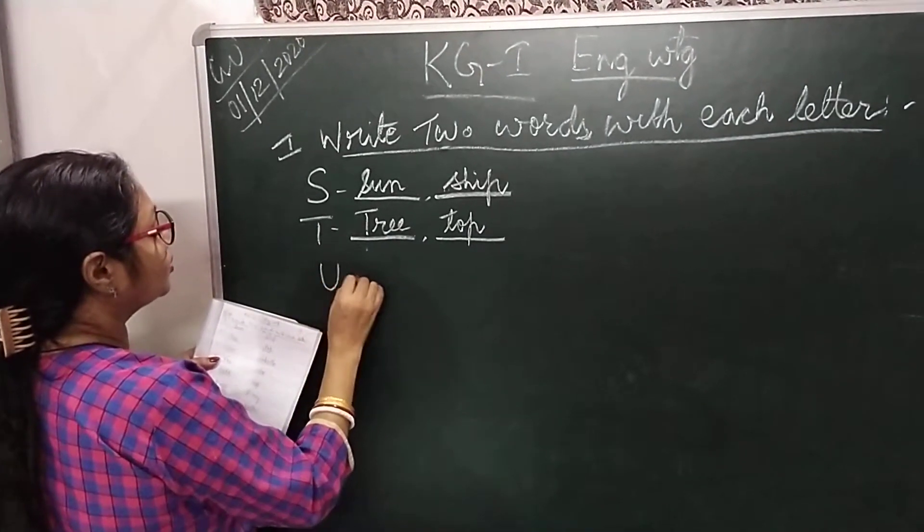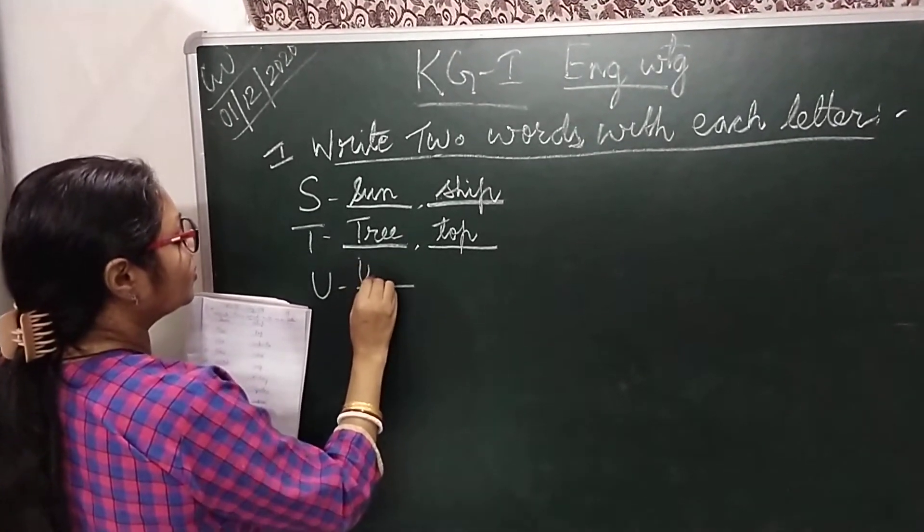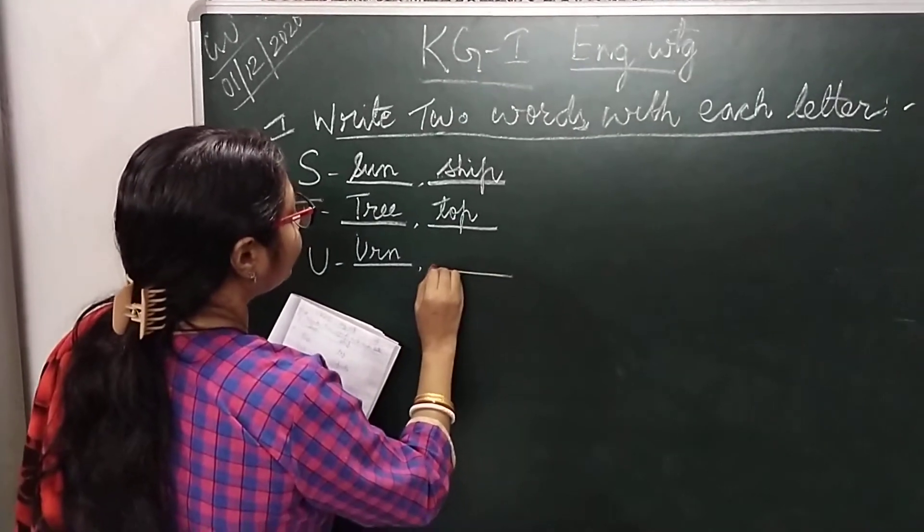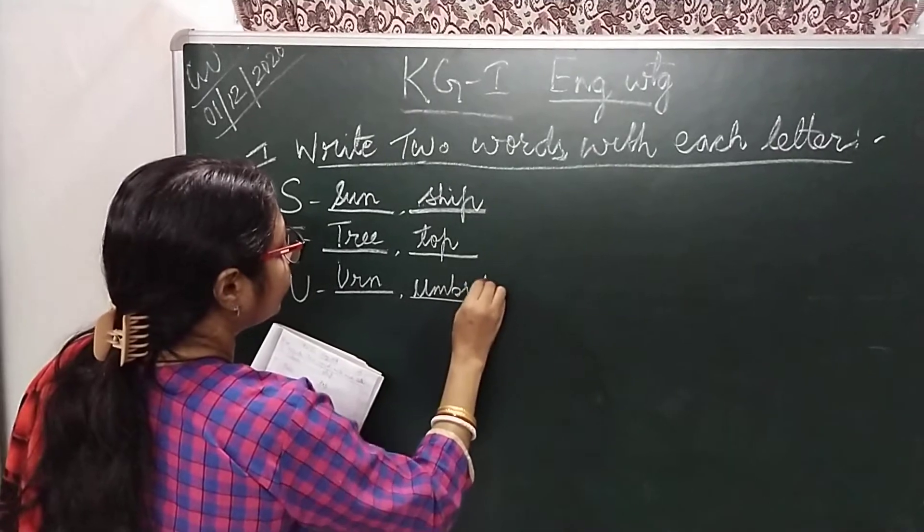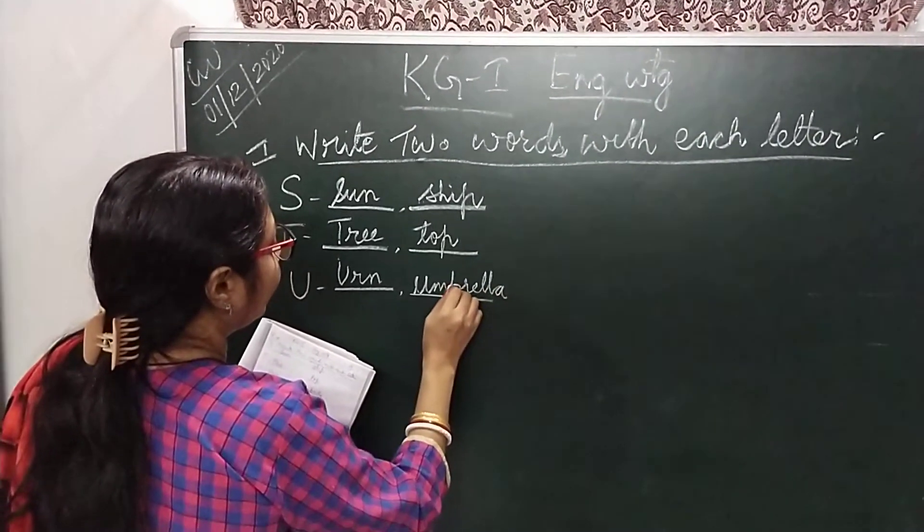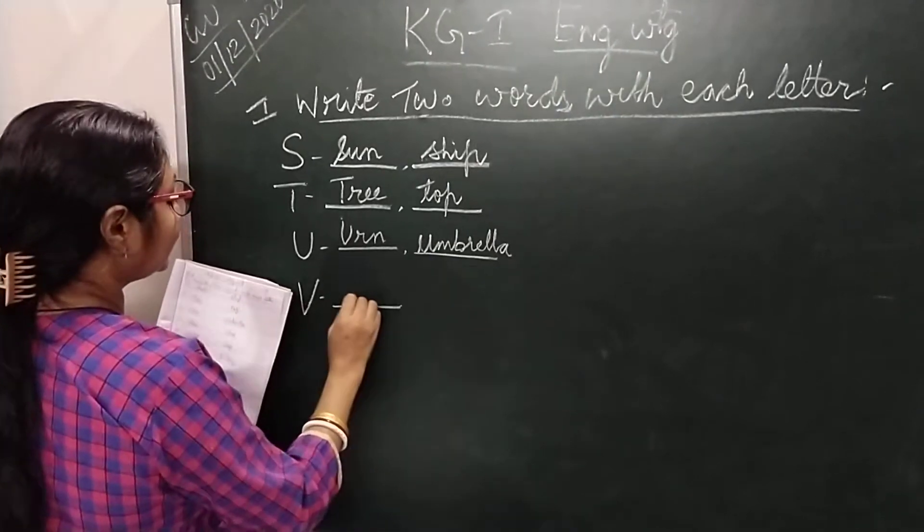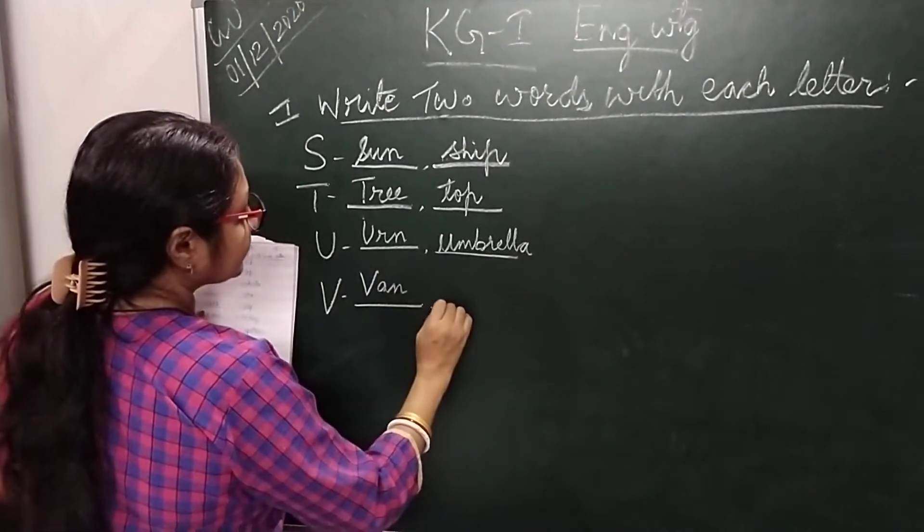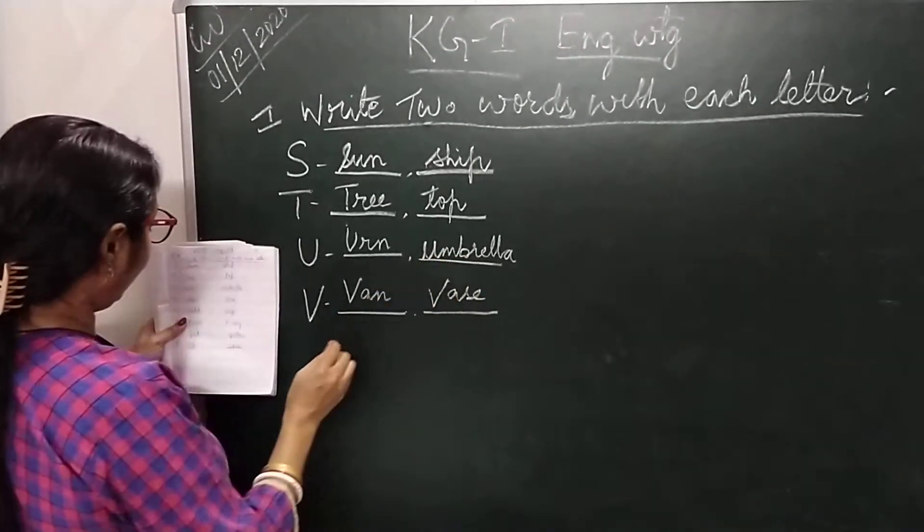Then with U, the first word is U-R-N urn. The second word is umbrella, U-M-B-R-E-L-L-A umbrella. Then with V, the first word is V-A-N van. The second word is V-A-S-E vase.